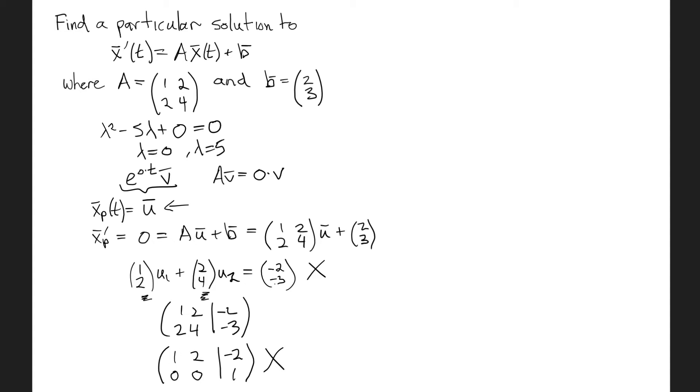Now had we used a vector here that had that very special form where the second component was twice the first, we'd be able to solve this. That would be because the vector b is in the column space, the space spanned by the vectors in the columns of A. But we did not have such a special vector, so we have to find a new approach. The new guess that we're going to try, and this is motivated by what we did in second order equations, is we're just going to multiply u by t.